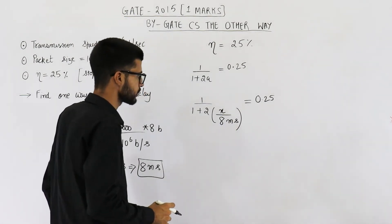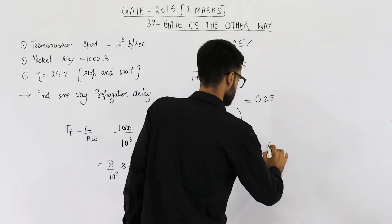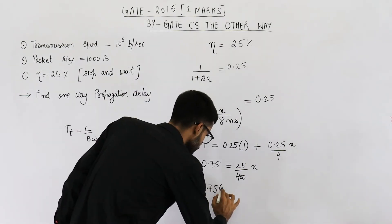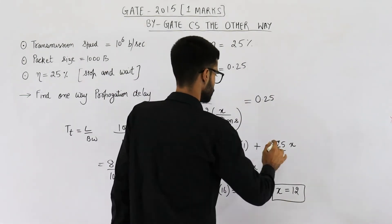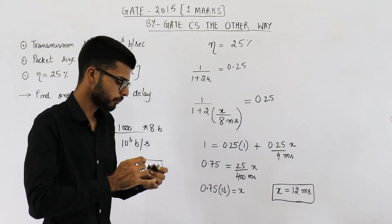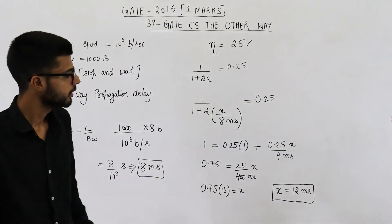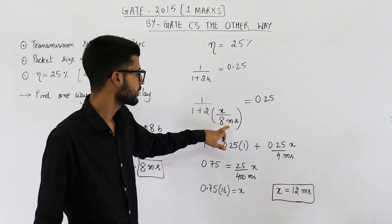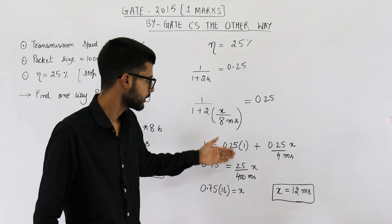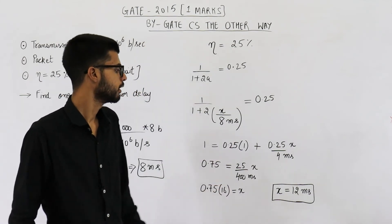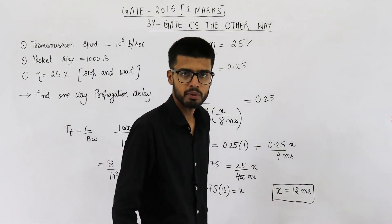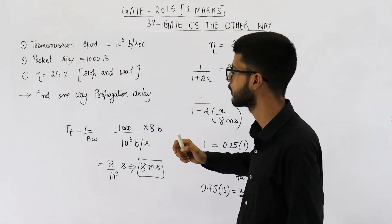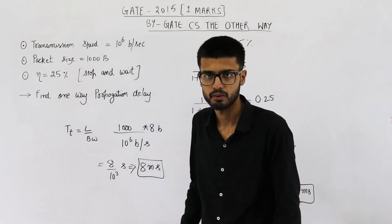Solving this equation, the value of x comes out to be 12 milliseconds. Since the unit throughout was milliseconds, x = 12 milliseconds. That means the propagation delay must be exactly 12 milliseconds if we want an efficiency of 25 percent.